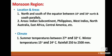Summer temperatures between 27 degree and 32 degree centigrade. Winter temperatures between 15 degree and 24 degree centigrade. Rainfall 250 to 2500 millimetre. Areas get rains in specific seasons from the southwest monsoon. Rainfall is highly variable and distribution is quite uneven.